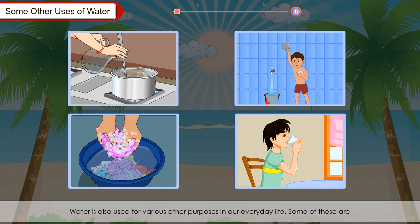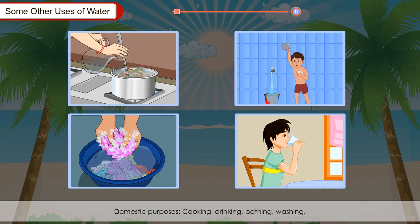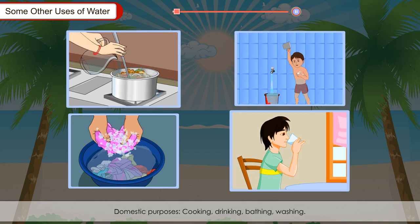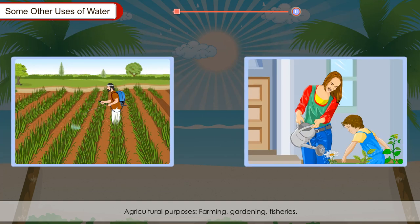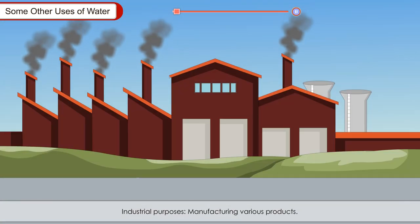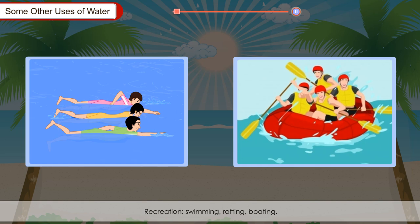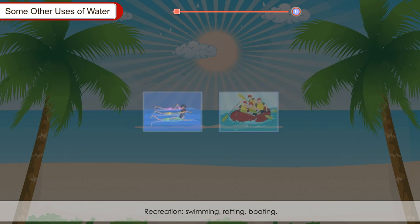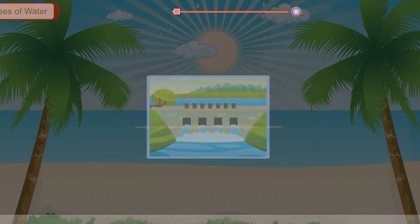Some other uses of water. Water is used for various purposes in our everyday life. Domestic purposes include cooking, drinking, bathing and washing. Agricultural purposes include farming, gardening and fisheries. Industrial purposes include manufacturing various products. Water is also used for recreation such as swimming, rafting and boating, and for hydropower generation for electric supply.